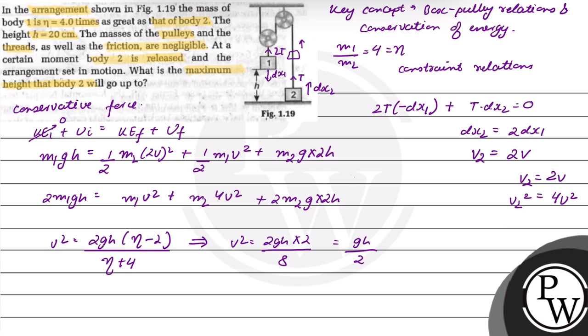It will move a distance of h' due to its remaining kinetic energy. So h' = v₂²/2g, and v₂² is 4v²/2g. We know that v² = gh/2, so h' is equal to h.